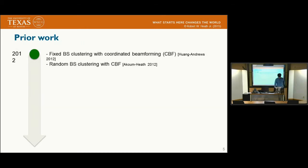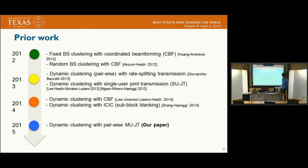There was much prior work that analyzed cooperative networks built on stochastic geometry. In 2012, Haenggi and Dr. Heath tackled analyzing random BS clustering with CVF. In 2013, dynamic clustering with rate splitting and dynamic clustering with single joint transmission were characterized. In 2014, dynamic clustering with CVF and ICIC were also analyzed. Our paper extends this by tackling dynamic clustering with multi-user transmission.